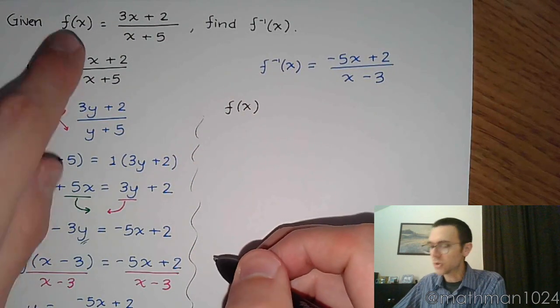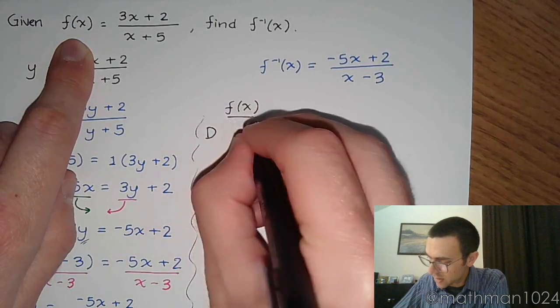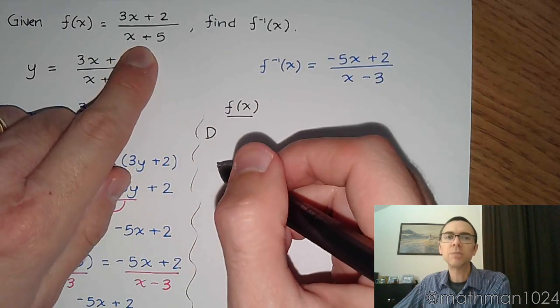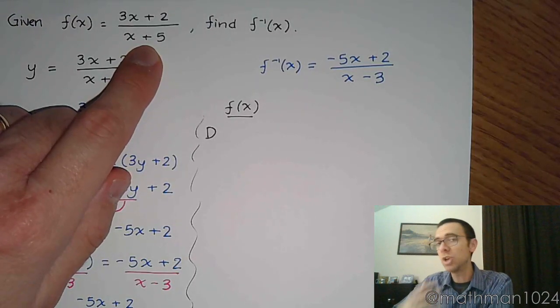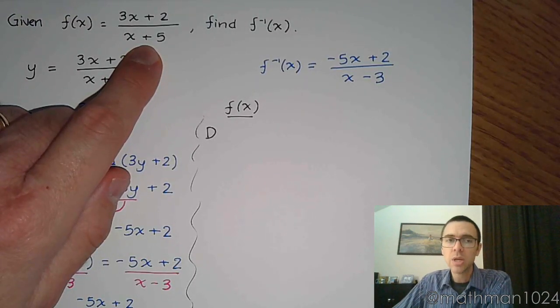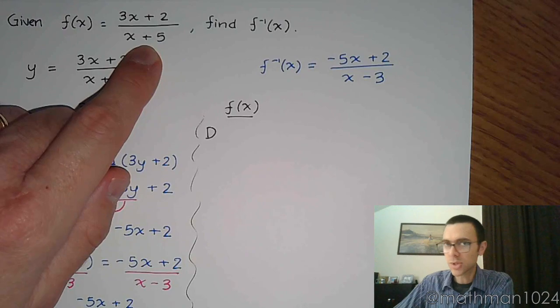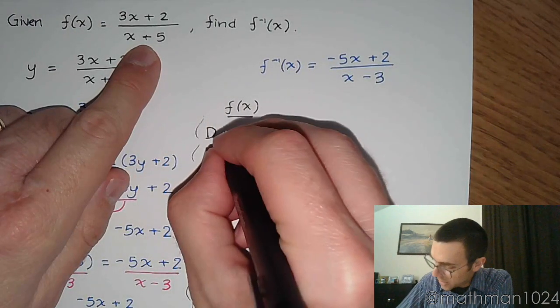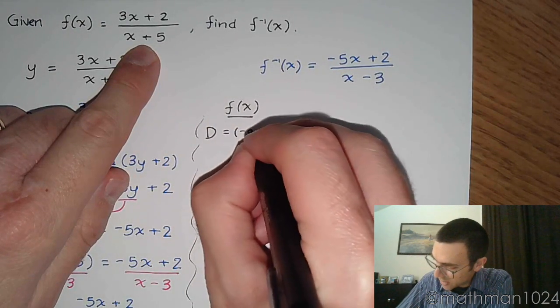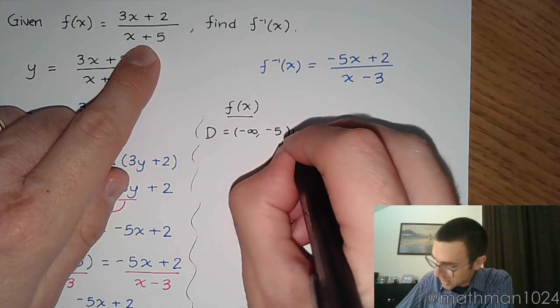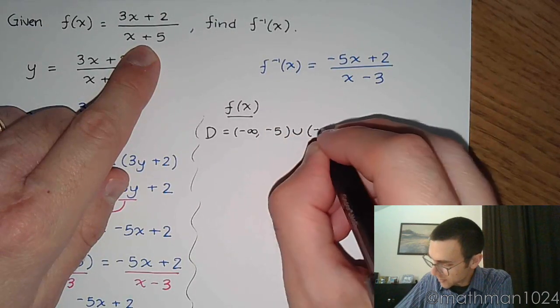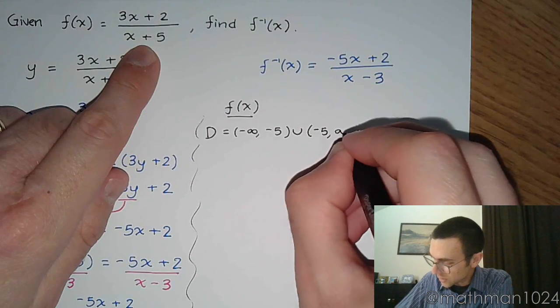For my function, his domain, well his domain is only limited by what you had in the denominator, so the denominator can't be equal to 0. So the value of x that makes this equal to 0 is -5. So your domain is everything but -5.